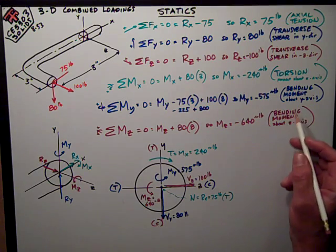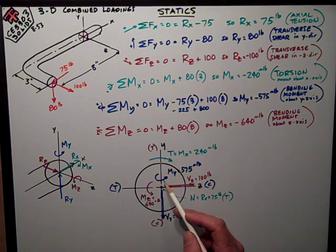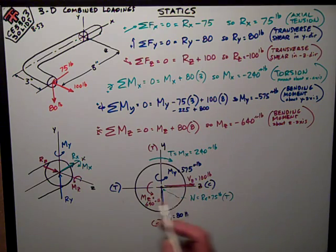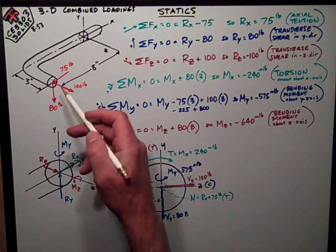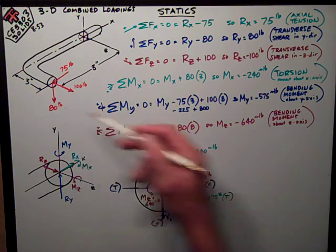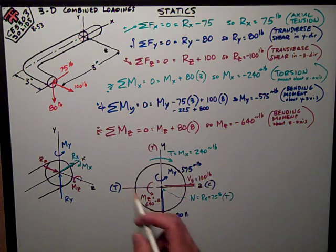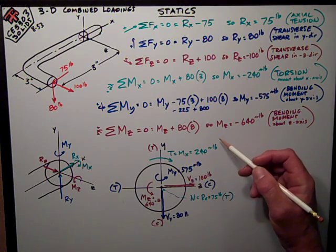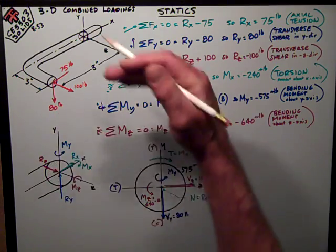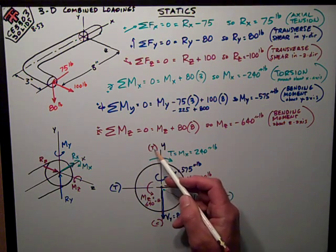I've got bending moment about both axes. So here I've looked at MY, 575 inch-pounds, and looking at what it's doing, it's putting compression on this side of the Y-axis and tension on this side of the Y-axis. It's caused by, the majority of it's caused by this 100-pound force this direction trying to rotate this way. So it's putting compression on the right side and tension on the left side.